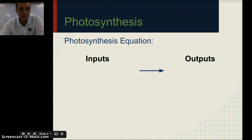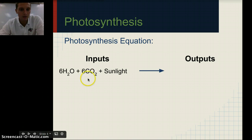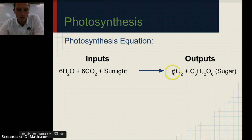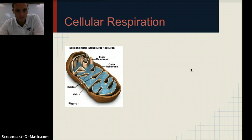You'll need to know the equation for photosynthesis. The inputs are six water molecules — water is H2O — and six carbon dioxide molecules — CO2 — as well as sunlight. From that, we get the outputs: six oxygen molecules (O2) and one sugar molecule, C6H12O6. All of this is the formula for one sugar molecule. That's photosynthesis.